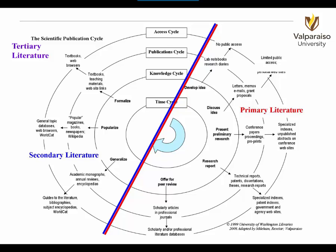On your printout, write the words 'primary literature' exactly as you see it here — above conference papers and below letters, memos, emails, and grant proposals. Write the words 'secondary literature' above academic monographs and below Wikipedia. Write the words 'tertiary literature' in the upper left corner near the words textbooks. You will use these words later to complete your compass.